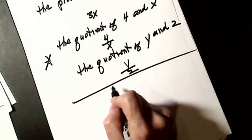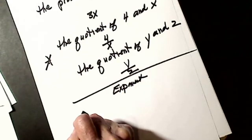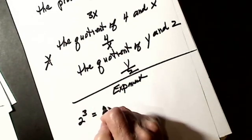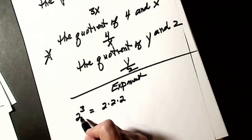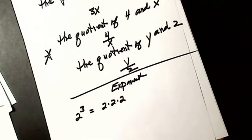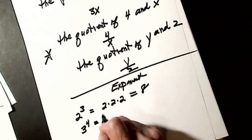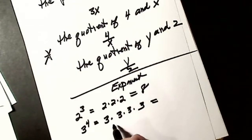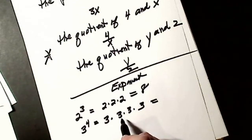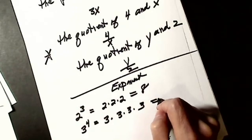You have to understand what an exponent is. If I have 2 to the third power, it means 2 × 2 × 2. The exponent tells me how many times the base is multiplied by itself, and I would get 8. If I have 3 to the fourth power, that's 3 × 3 × 3 × 3: 3 threes are 9, 3 nines are 27, and 27 times 3 is 81.